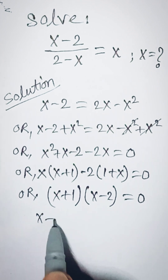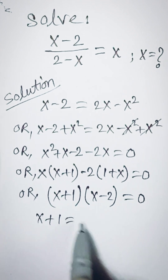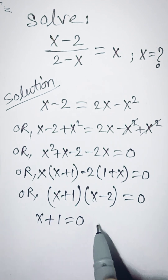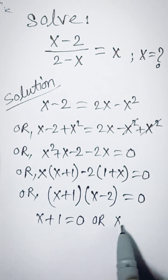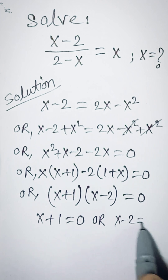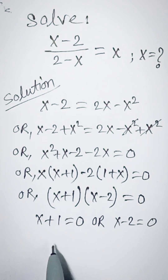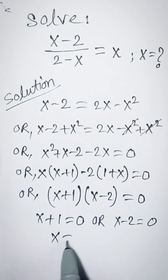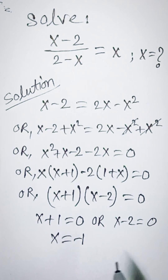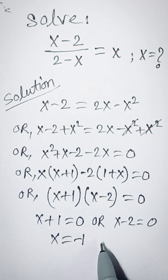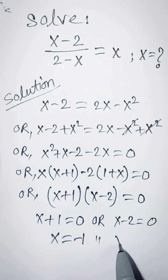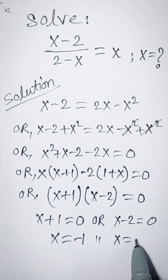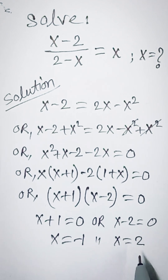Either x plus 1 is equal to 0, or x minus 2 is equal to 0. Therefore x is equal to minus 1, or x is equal to 2. These are our answers.